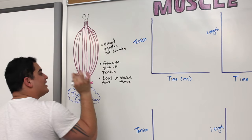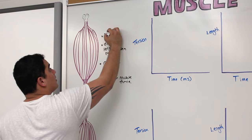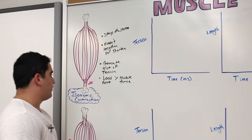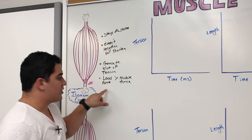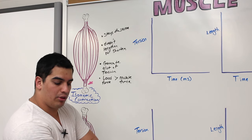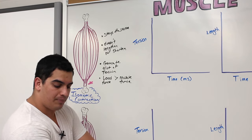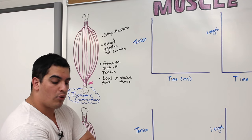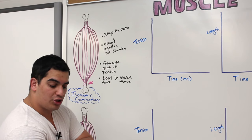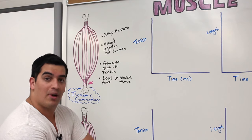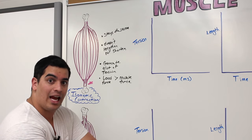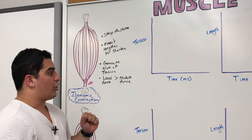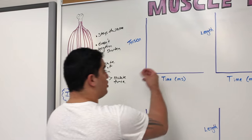To recap isometric contraction: the load force — that heavy 100-pound dumbbell pushing down toward the center of gravity — is greater than the muscle force. When the muscle contracts it can generate a lot of tension, but it does not shorten nor lengthen; it stays at the same size or same measure. That is the concept of isometric.